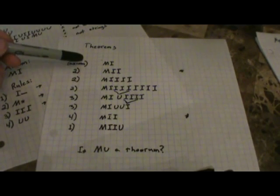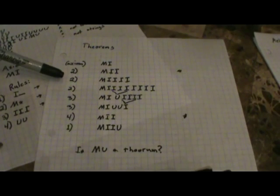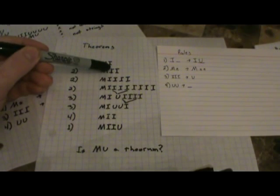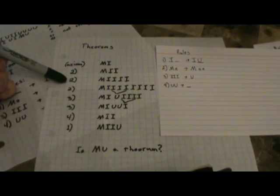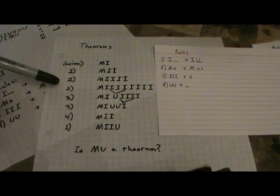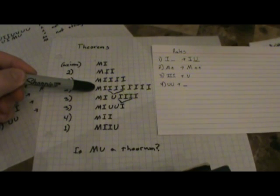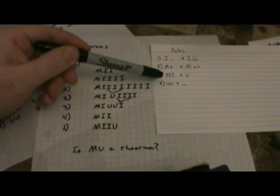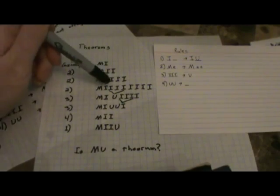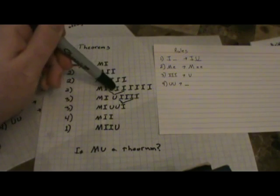Not everything's a theorem — some things are only well-formed strings but not theorems. So we start off with the axiom, which we've already been given, and let's keep the rules handy. First thing we'll do is apply rule number two: whatever comes after the M, you can double it. So we had MI, and we have MII after using rule two. Then let's use rule two again: we had MII, we double the II, and there are four of them. This just illustrates that there are certainly infinitely many theorems, since you can just keep doubling it as many times as you want — four, now eight. Now let's start making it smaller. Rule three takes three characters and turns them into one, so that makes things shorter. Since we have a whole bunch of I's, let's take three of them and turn them into U — it doesn't matter which ones. So we used rule three and now we have MIU then four I's.